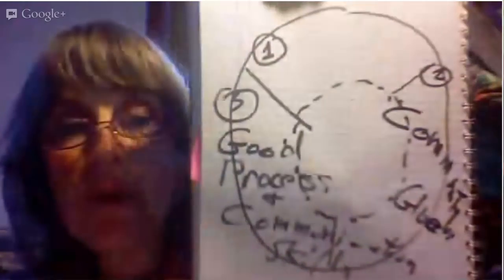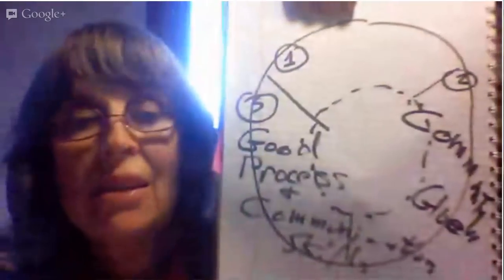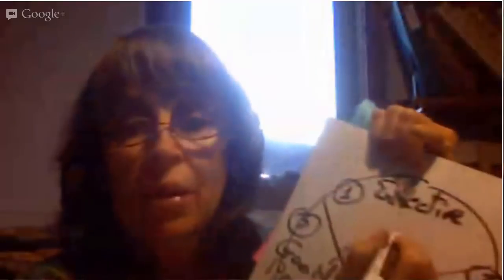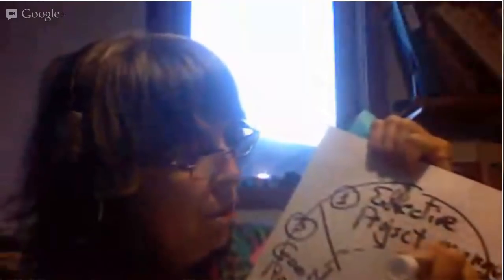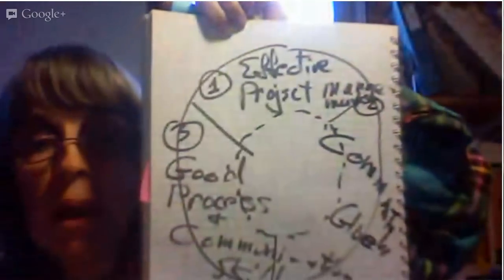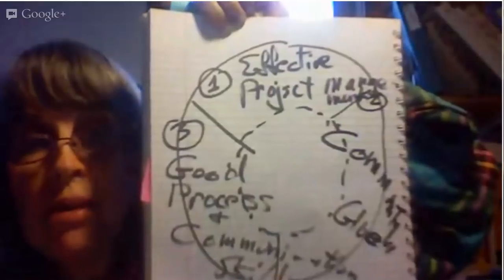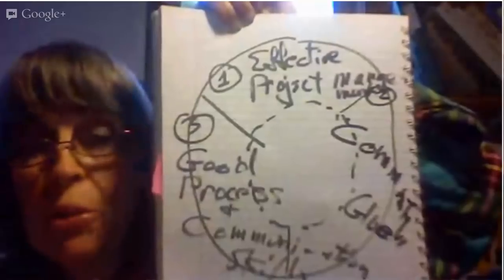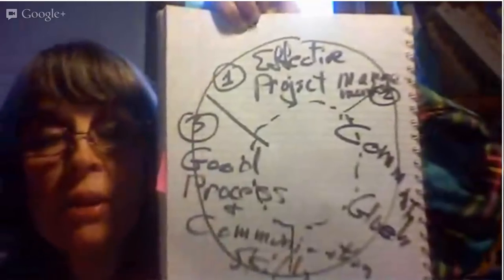The third one, which I've saved for last because it's not the most obvious but it's super important, is effective project management. You might think, why do we need that? We're a community, not some business. So here are the three things: effective project management is number one, creating community glue is number two, and good process and communication skills is number three.